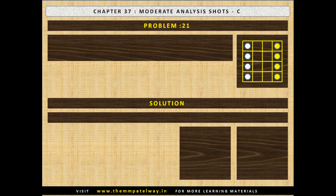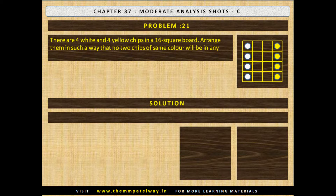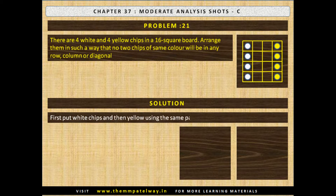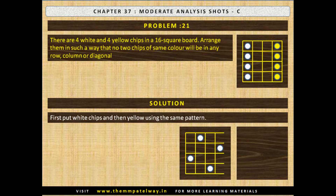Problem No. 21. There are four white and four yellow chips in a 16-square board. Arrange them such that no two chips of the same color are in any row, column or diagonal. The solution: first place the white chips, then the yellow ones using the same pattern. Two steps of the solution are shown.